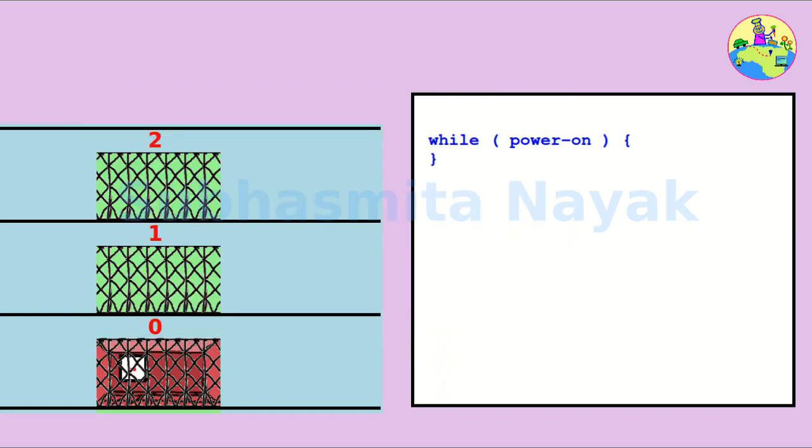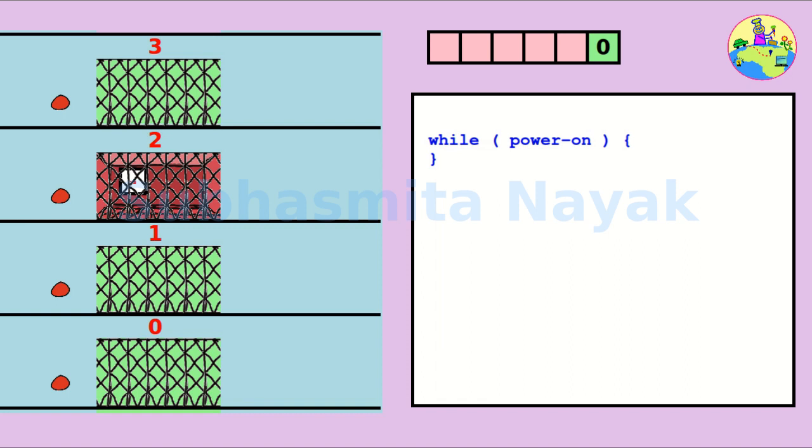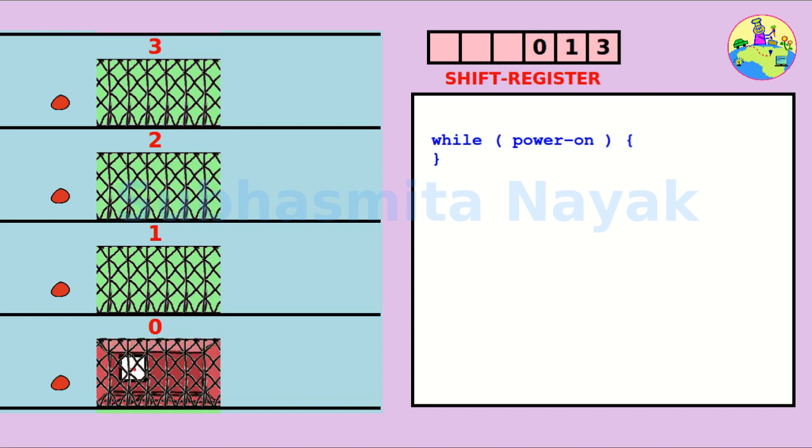Let's say we have 4 floors in a building: 0, 1, 2, and 3. We will maintain a list of requests and the lift will process the request on a first-come, first-serve basis. In electronics terms, we do this with the help of shift registers.